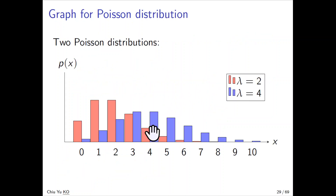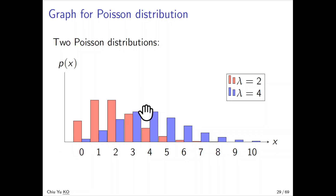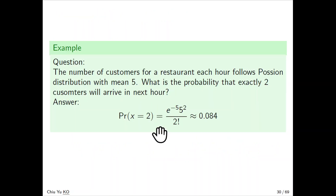Let's look at the graph to see what it looks like. Look at this red one — the mean is 2 and it looks like this shape. As lambda becomes bigger, it looks a little bit more like a bell shape. The example is: suppose the number of customers for a restaurant per hour follows a Poisson distribution with mean 5.